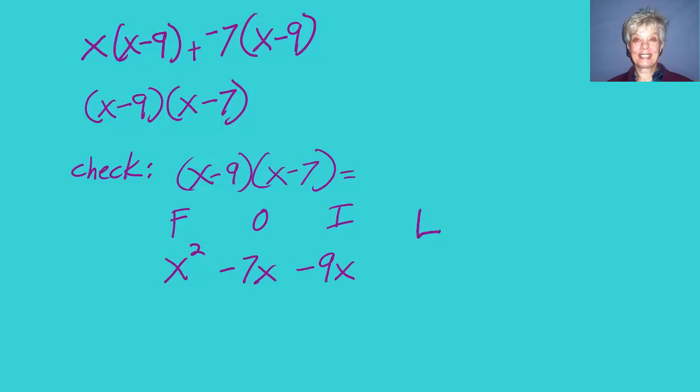What I get is x squared minus 7x minus 9x plus 63. Negative 7x minus 9x is negative 16x plus 63. This is what I started with, so I'm correct. I have the correct factorization.